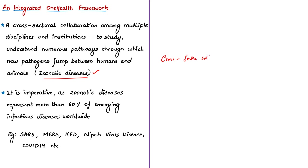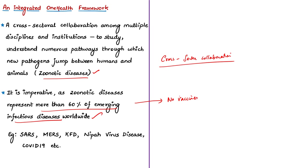According to the authors, zoonotic diseases represent more than 60% of emerging infectious diseases worldwide. These are dangerous because vaccines cannot be prepared immediately to prevent such diseases. Examples include SARS, Middle East Respiratory Syndrome (MERS), and in India — Kyasanur Forest Disease and the Nipah virus. Even the current COVID-19 outbreak, announced as a pandemic by the World Health Organization, has been passed from animals to humans.